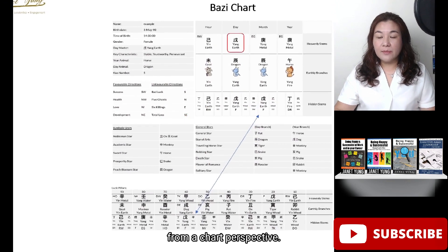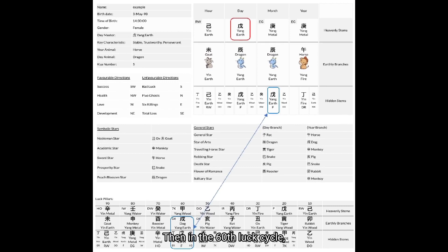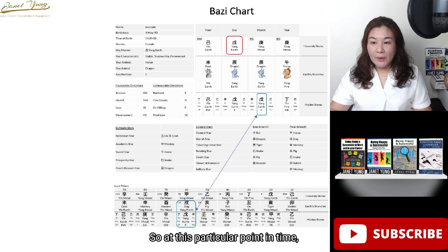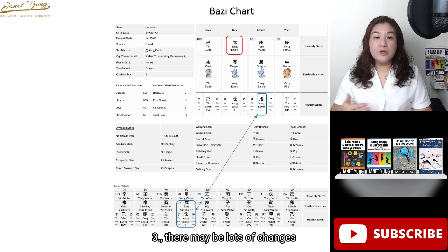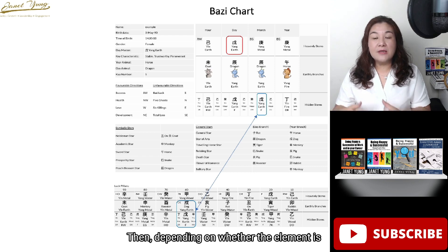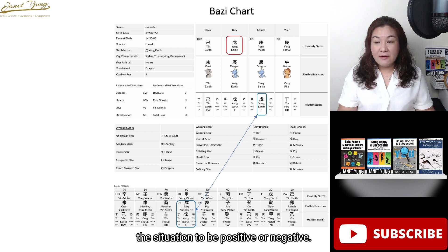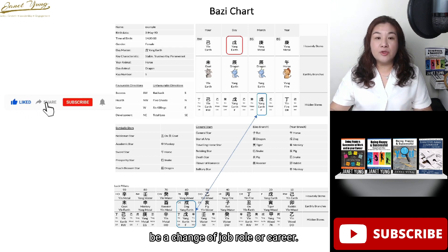Looking at this from a chart perspective: this person is born in the month of the dragon. In the 60th luck cycle, they will go through the luck cycle of the dog. Since dragon and dog clash, at that point in time the clash means a change — either of job, or mindset regarding career, or lots of changes in the immediate work department or bosses. Depending on whether the element is favorable or unfavorable, the person may perceive the situation as positive or negative and then decide whether to change job role or career.